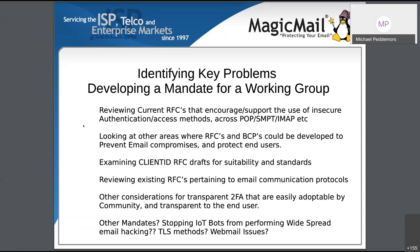Once we agree this is a serious enough problem, we have to develop a mandate for a working group. Some suggestions from the mailing list: whether we should review current RFCs that encourage or support insecure authentication and access methods; whether we should look at other areas where RFCs and BCPs could be developed to help prevent email compromises; and one of our main goals is the ability to examine our Client ID RFC drafts for suitability and standardization.